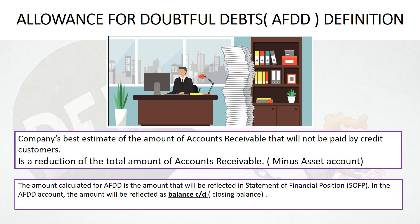Before we reconstruct Allowance for Doubtful Debts, we must know the definition. The definition of Allowance for Doubtful Debts — in short we call it AFDD — is the company's estimate of the amount of accounts receivable, which are our credit customers, that may not be able to pay us at the end of the year. So AFDD is a reduction of the amount from accounts receivable.